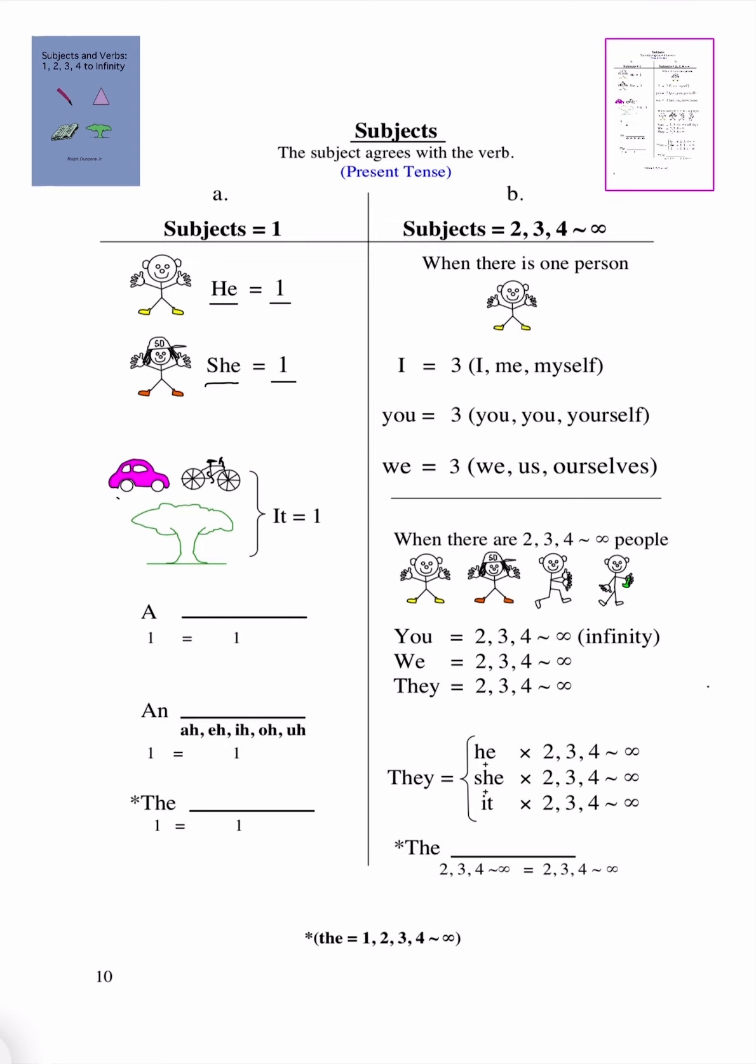A car equals 1, a bike equals 1, and a tree equals 1.